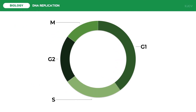Cells do not immediately divide during the cell cycle — they undergo three important events. First, before actually dividing, cells need to grow and prepare other organelles during the Gap 1 or G1 phase. For the daughter cells to be exactly the same as the parent cell, cells need to duplicate their DNA during the Synthesis or S phase. Cells then undergo another checkpoint in Gap 2 or G2 phase to check for any damages during DNA replication. Only if these three steps go smoothly will the mitotic phase proceed.